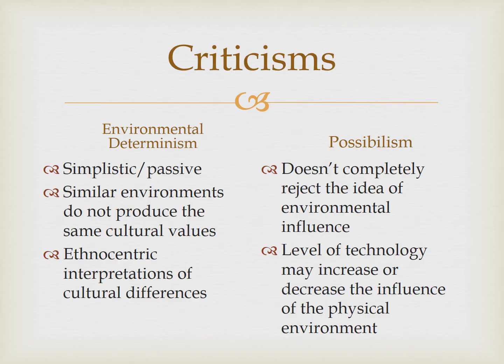Because both environmental determinism and possibilism are theories about how humans and the environment interact, there are criticisms that both schools of thought face. Critics of environmental determinism argue that it overemphasizes the role of the environment by stating that humans are passive pieces to be controlled by the physical environment. A more prominent criticism, and the reason it's been largely discredited, is that this theory was used to argue that certain regions were superior and others inferior, and because physical environment causes culture, there were certain cultures that were superior and others that were inferior.